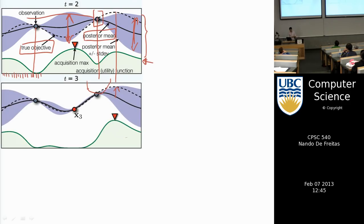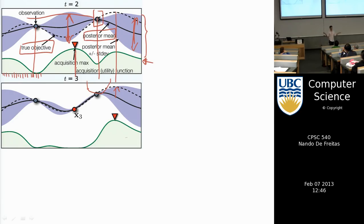There will be something like a green curve — the acquisition function — that balances the desire to look at areas of high uncertainty and areas where the mean is high. This green curve tells you where to sample next. If you acquire a new point there, you refit the Gaussian process — inverting a three-by-three matrix — recompute the acquisition function, and use it to select the next point. The rest of this lecture is about how we construct that green curve.